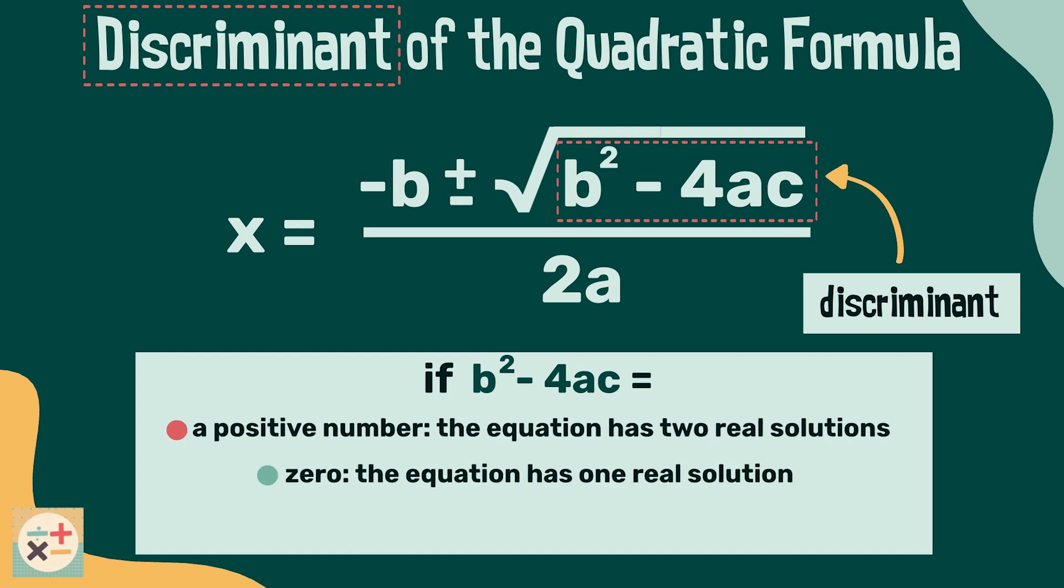If it is zero there will only be one solution, and if it is negative there will be no real solutions, only solutions using imaginary numbers but this won't usually be covered at GCSE level.